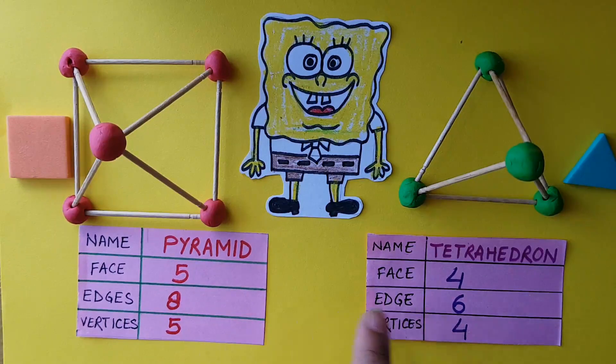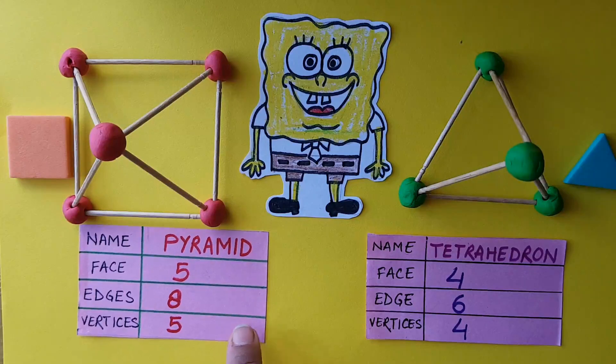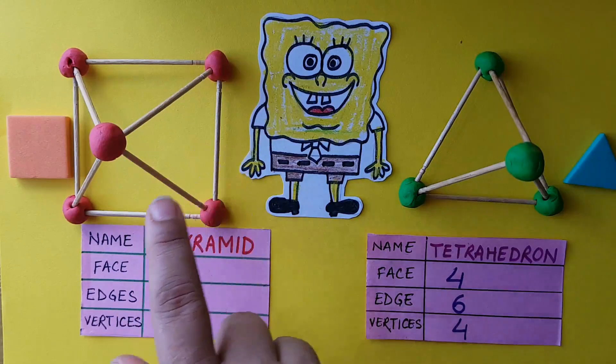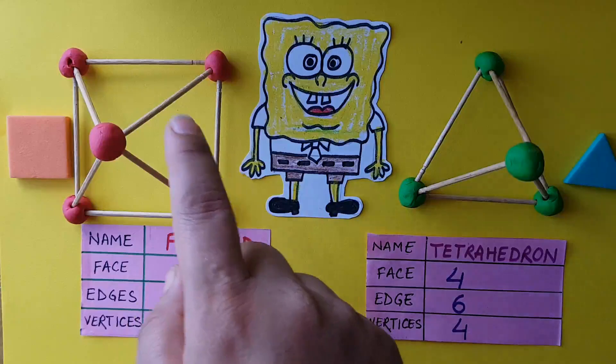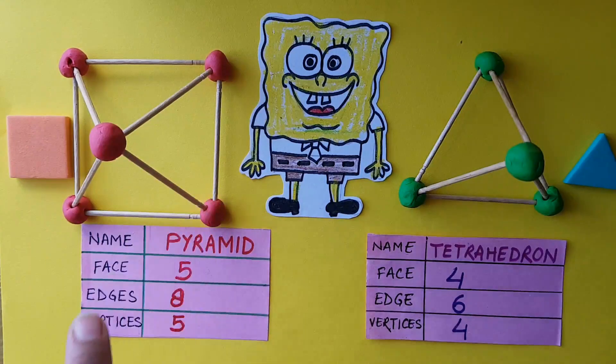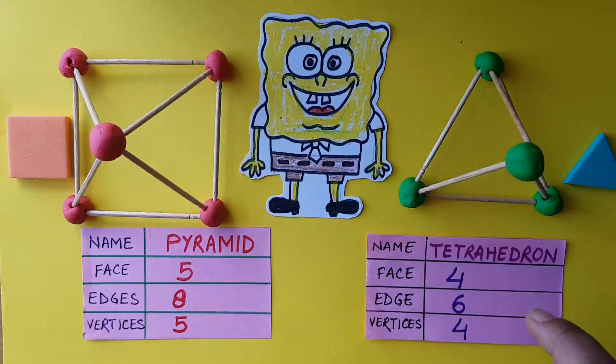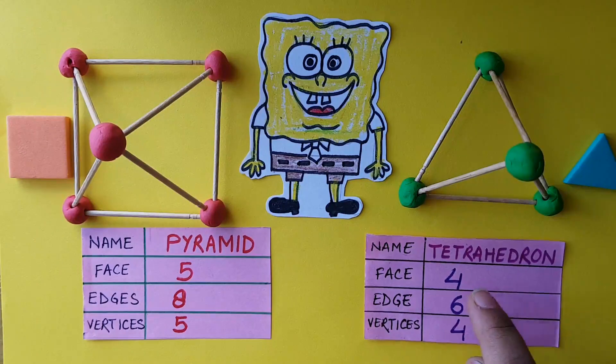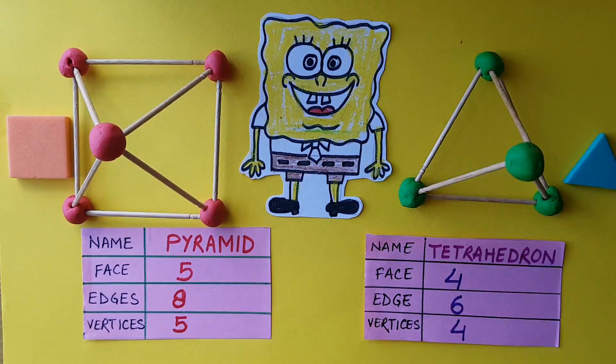The faces, you can see the triangles here. There are four triangles in the pyramid, and here you can see four triangles in the shape of tetrahedron.